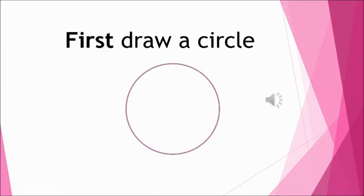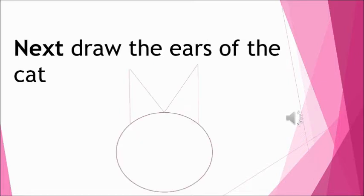Now first draw a circle. Can you see how I have drawn? So first you will draw a circle. Next you will draw the ears of the cat. Can you see — like an M I have made on top? So in the same manner you will draw the ears of the cat.